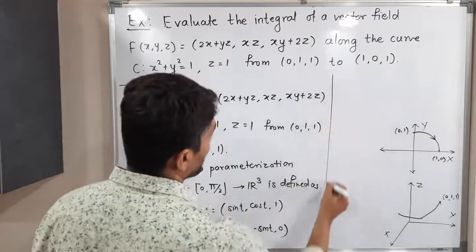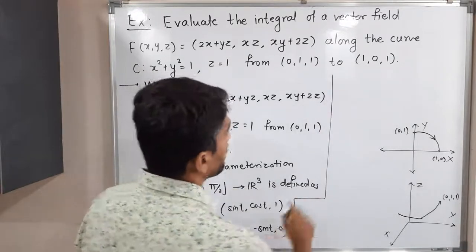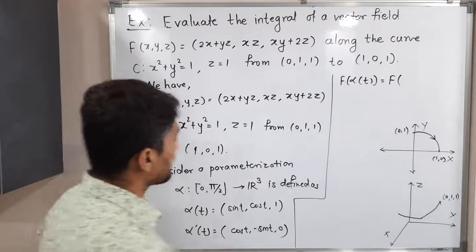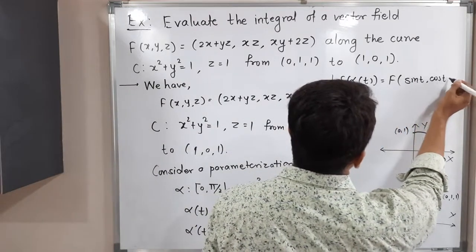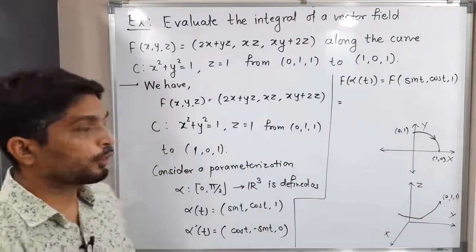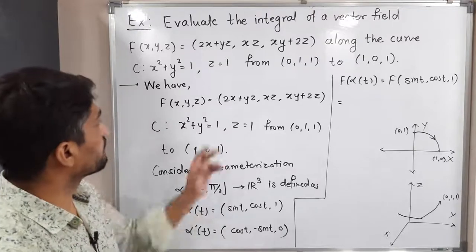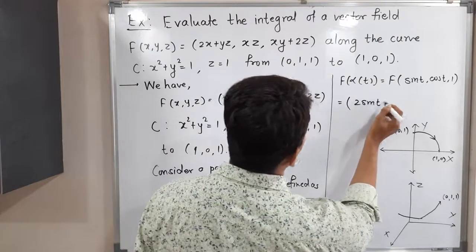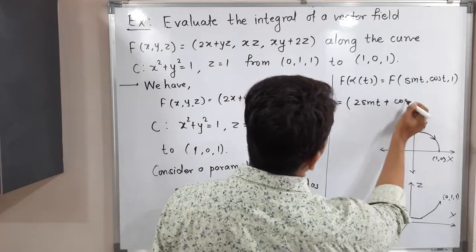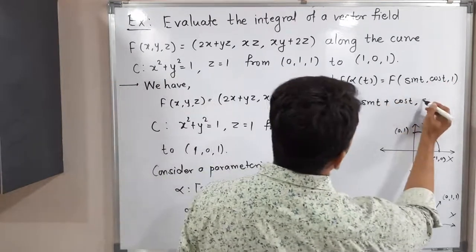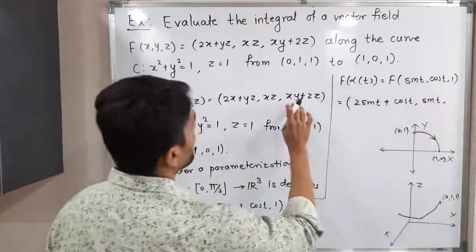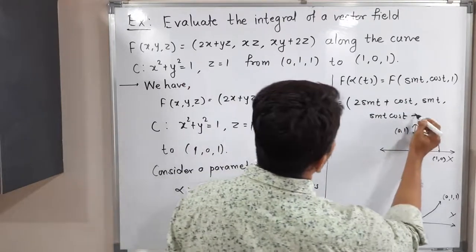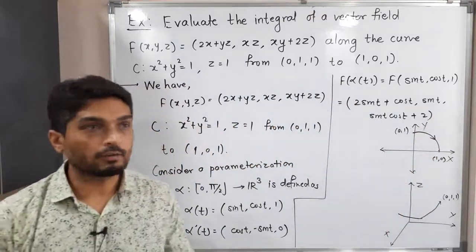Now we want f(α(t)). Our α(t) = (sin t, cos t, 1), and we operate f on this point following the definition of f. The first component is 2x = 2 sin t, plus yz = cos t · 1 = cos t. The second component is xz = sin t · 1 = sin t. The third component is xy + 2z = sin t cos t + 2·1 = sin t cos t + 2. So f(α(t)) = (2 sin t + cos t, sin t, sin t cos t + 2).